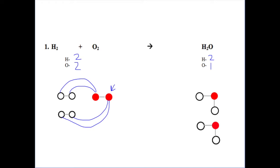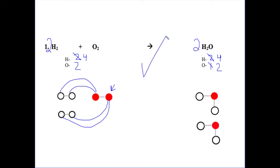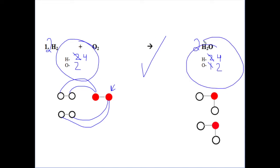We can show this in our chemical formula by using coefficients. I put a 2 in front of the H2 and a 2 in front of the H2O. We now have four hydrogens on the reactant side and two oxygens. On the product side, we now have four hydrogens and two oxygens. Everything is now balanced. This equation is now following the law of conservation of mass — the number of reactants is equal to the number of products, and every atom present at the beginning is still there at the end.